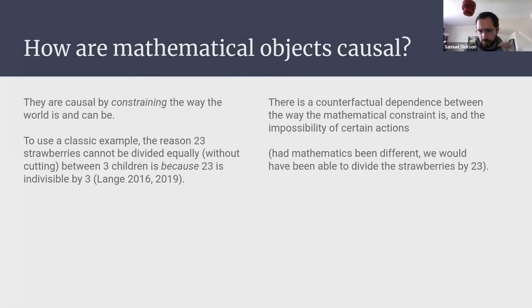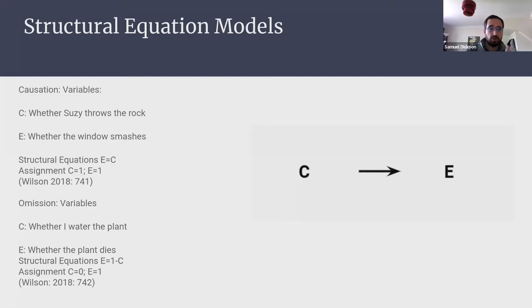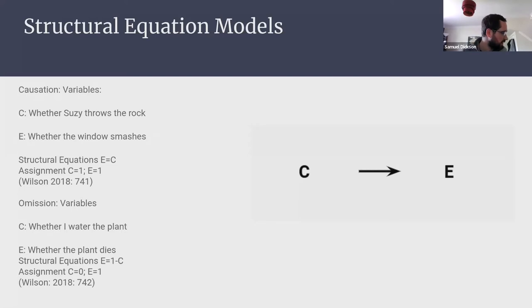There's counterfactual dependence from the mathematical fact to the physical impossibility in the world: had mathematics been different, we probably would have been able to divide the strawberries. That's the sense of causation I'm talking about. I'll show that this counterfactual dependence suffices for causation by talking about structural equation models and the interventionist approach. You build diagrams, play around with the variables — the classic example: Suzie throws a rock and the window smashes. Under interventionism, we recreate the scenario, manipulate it so Suzie doesn't throw the rock, and the window wouldn't smash.